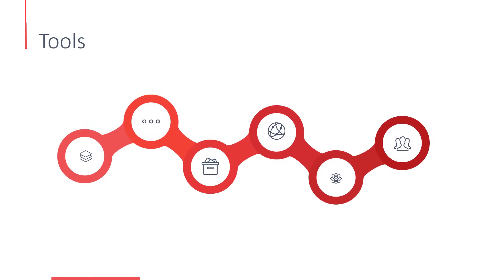OpenShift adds support for developer tools such as built-in integration with source code management software like GitHub. OpenShift also has built-in integration with build pipelines that helps developers rapidly and consistently develop, build, test, and deploy applications. OpenShift helps manage Docker images of your application by providing a built-in registry.